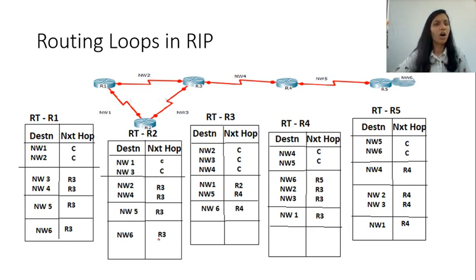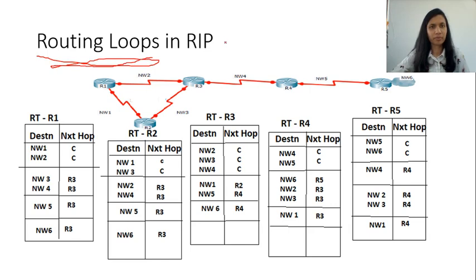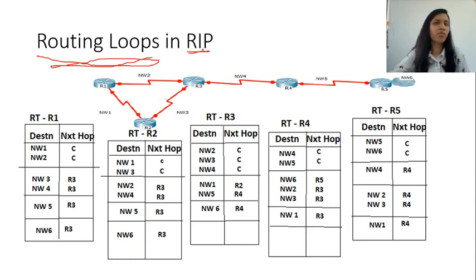RIP has one major issue called routing loops. RIP, being a distance vector routing protocol, relies on information from the neighboring router to build its own routing table — that is, routing by rumor. Also, RIP uses periodic updates rather than immediate triggers, and this is what causes routing loops in RIP.